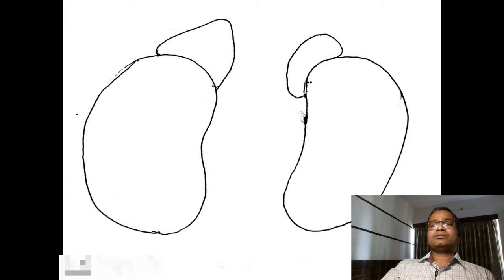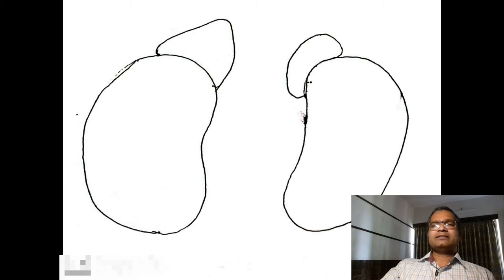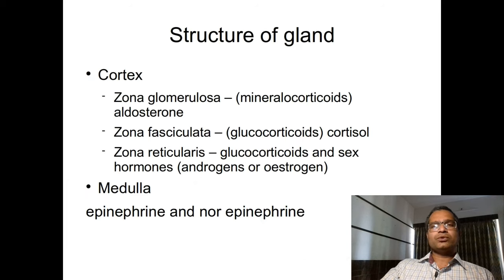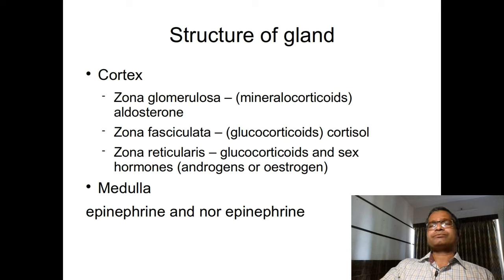Between the two suprarenal glands, from right to left, the following structures are present: on the right side — the right inferior phrenic artery, right celiac ganglion, cisterna chyli, and formation of the thoracic duct, then the aorta. On the left side — the left surface of the diaphragm, left inferior phrenic artery, and left celiac ganglion.